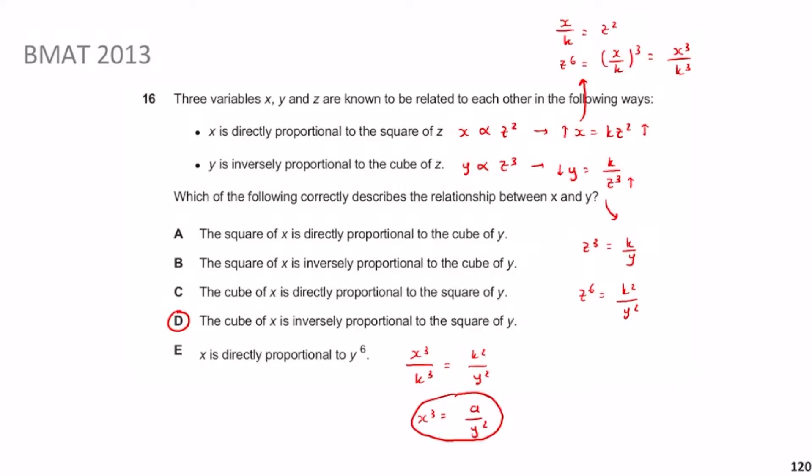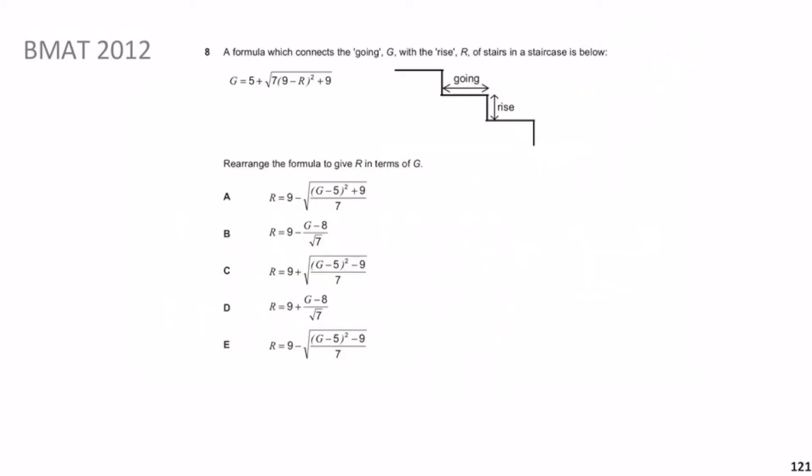Previously we were looking at BMAT 2013 question 60 to do with proportionality. Hopefully you found out that the answer was D. If you didn't, remember it's still early days — it really doesn't matter — and hopefully you managed to follow my worked solution.